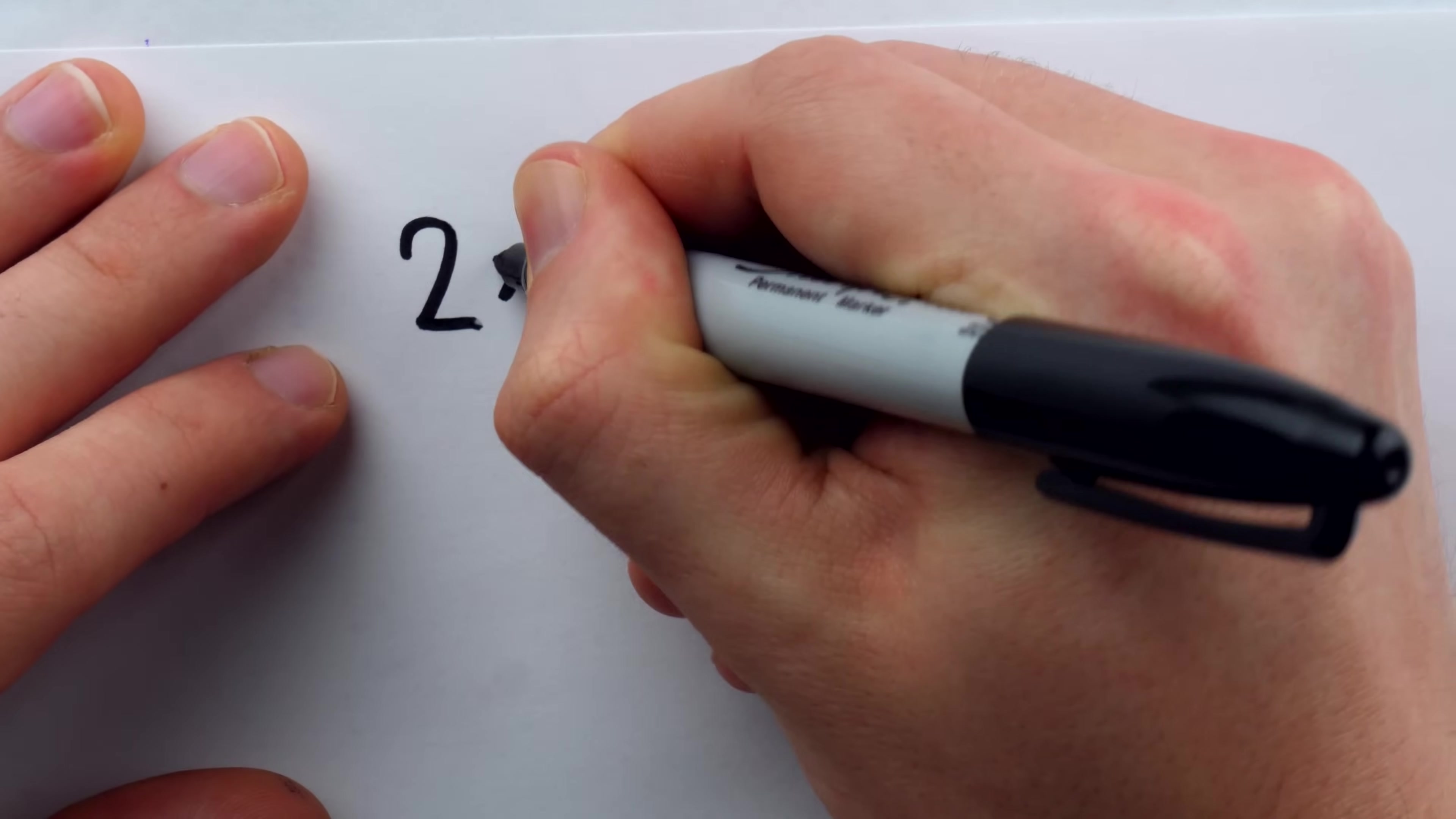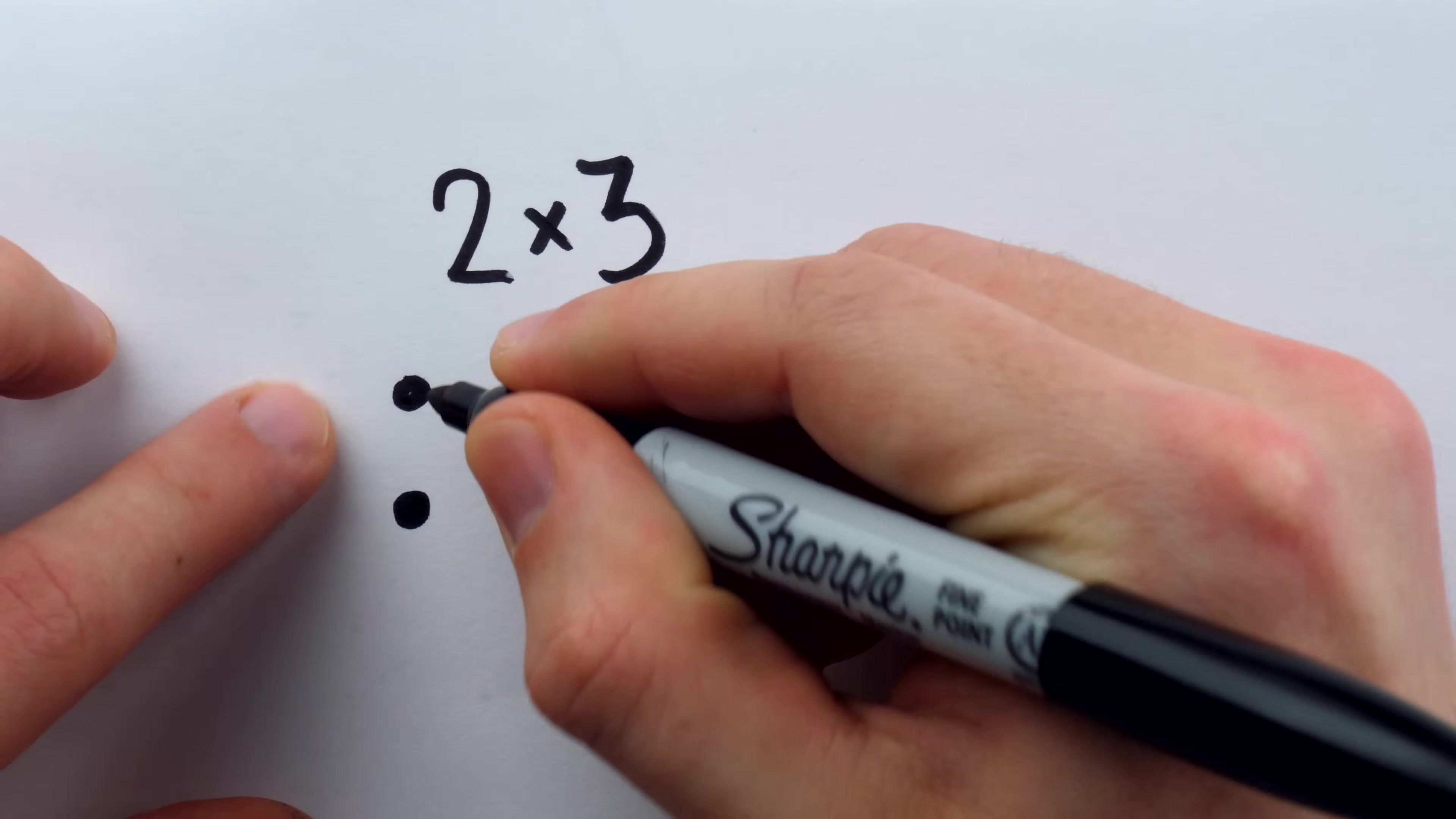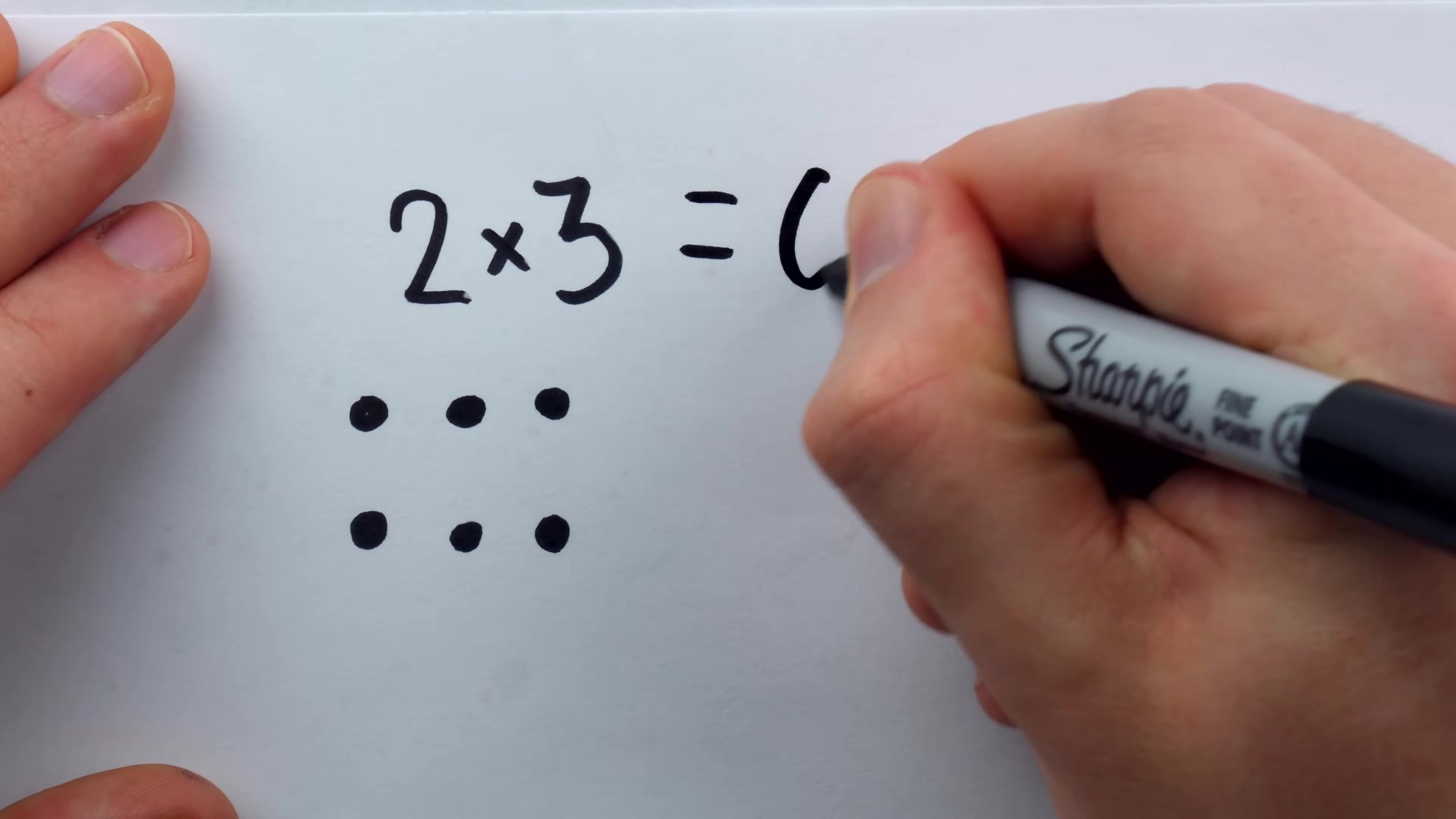What is two times three? Well, when you first learn about multiplication, you realize that you can figure that out by just considering two dots, three times, two dots, two dots, two dots. Look at that, it's six dots. Two times three is six.